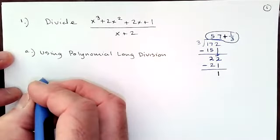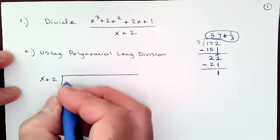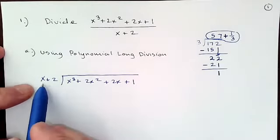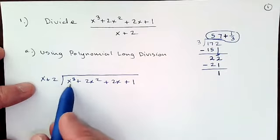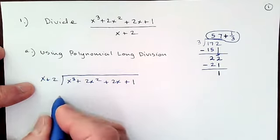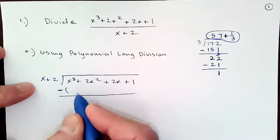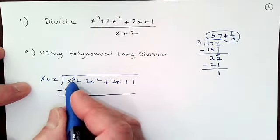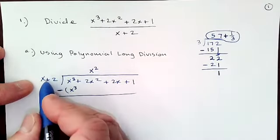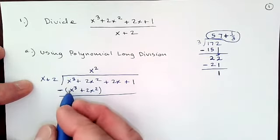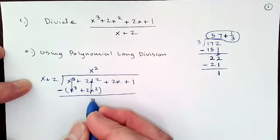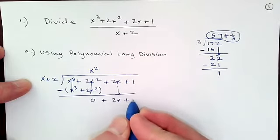So we want to divide x plus 2 into x cubed plus 2x squared plus 2x plus 1. It's the same algorithm, though it seems a little strange to ask how many times this goes into that. The way I think about it: whatever I put here, I'm going to multiply by x plus 2, bring it down, and subtract. I'd like to generate an x cubed term so they'll cancel. So I put x squared up here — x squared times x gives x cubed, but I also get 2x squared. Subtracting: x cubed minus x cubed cancels, and 2x squared minus 2x squared also cancels.